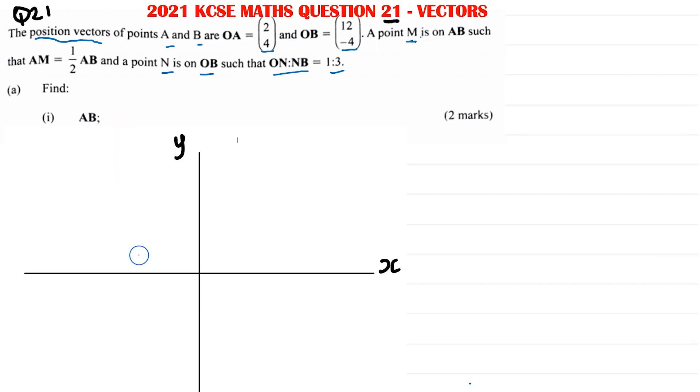A position vector basically starts from the origin, the point of origin (0, 0), and then it moves on from there. Now we're told point A, and then we're told OA has this column vector. Remember this is column vector. So what does column vector do? The top number is horizontal movement and the bottom number is the vertical movement. That's all it is.